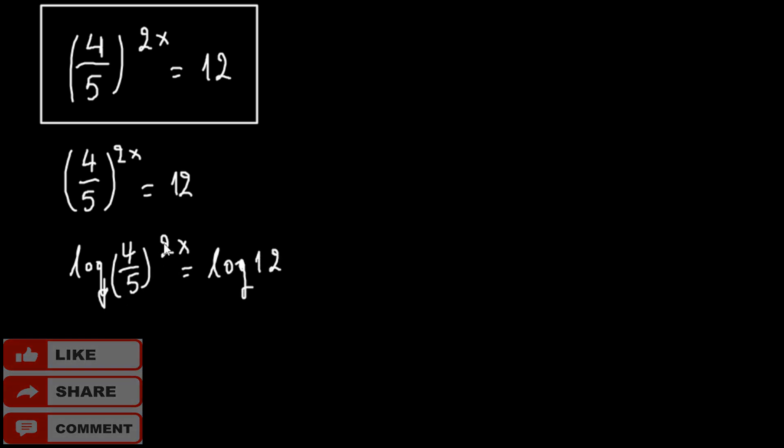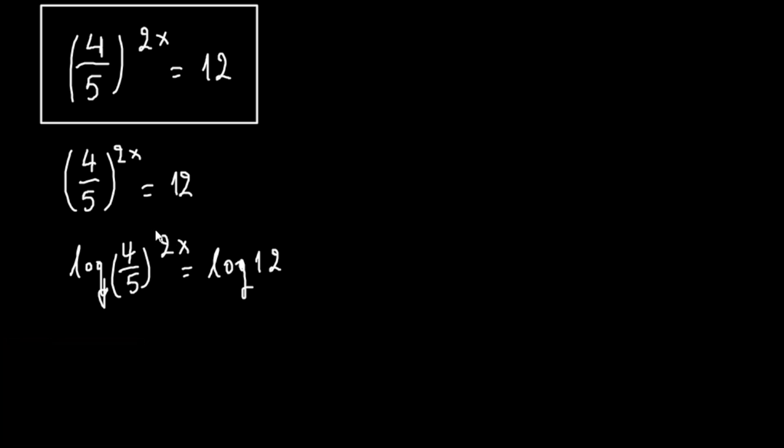If we remember the properties of logarithms, we can bring the 2x down, so we have 2x times the log of 4 over 5 equals the log of 12.